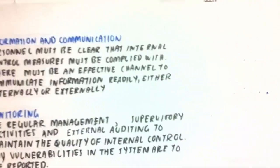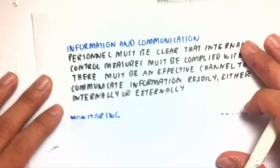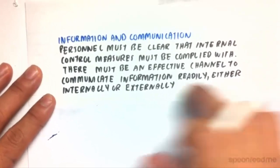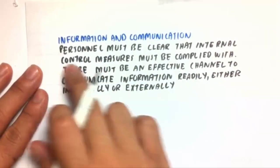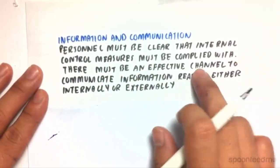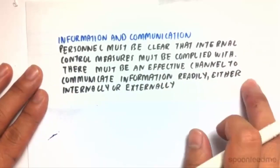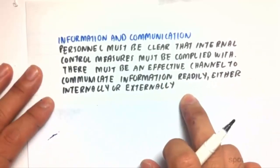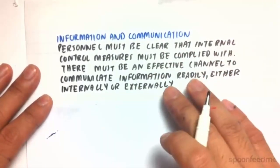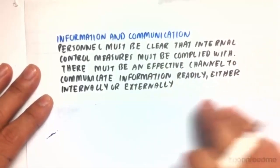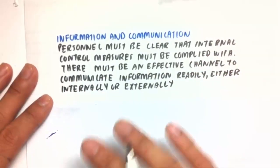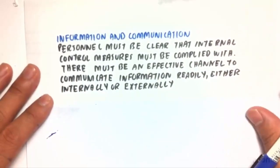Next is information and communication, which is one of the most important components. Personnel must be clear that internal control measures must be complied with, and there must be an effective channel to communicate information readily, either internally or externally. So if someone knows that someone is doing the wrong thing, they must have a clear channel to communicate to people higher up, like their supervisors.